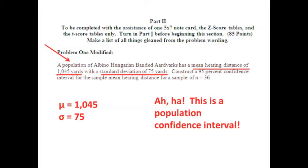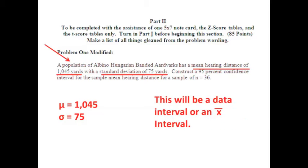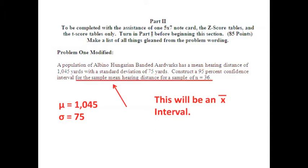What we have here is a population confidence interval for the sample mean. This is a population confidence interval. It will either be a data interval or it will be for an X bar interval. The thing that gives it away as an X bar is it says for the sample mean hearing distance for a sample of n equals 36.